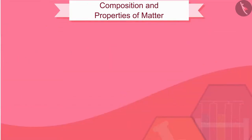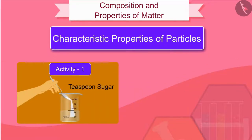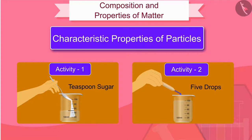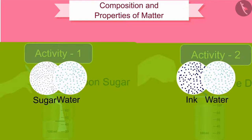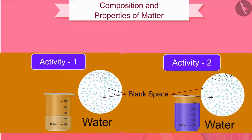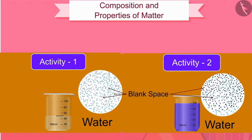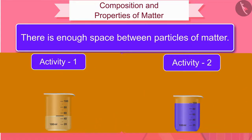Let us now learn about the characteristic properties of these particles of matter. In activities one and two, we saw how the sugar and ink particles were evenly distributed in water. This is possible because particles of one matter are incorporated into the spaces of particles of another matter, showing that there is enough space between particles of matter.